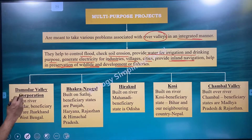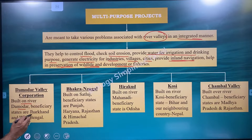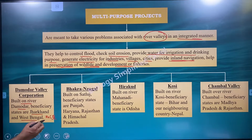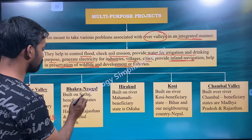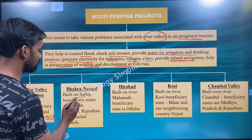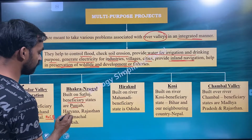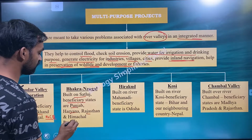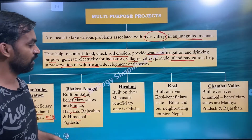Damodar Valley Corporation is built on river Damodar. Beneficiary states are Jharkhand and West Bengal. Bhakra Nangal Dam is built on river Sutlej. Beneficiary states are Punjab, Haryana, Rajasthan, and Himachal Pradesh.